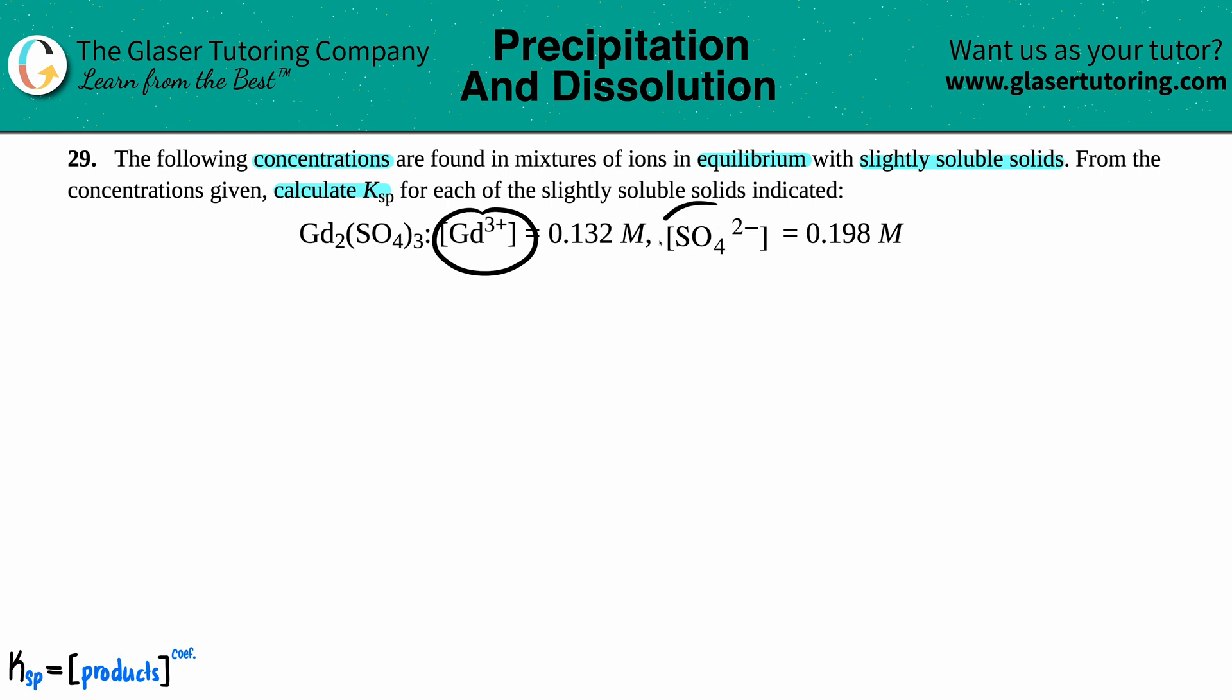They gave it to us already, so no guesswork. I'm just going to use what they gave me. So we got Gd2(SO4)3 and this comes to equilibrium because we're dealing with the K value with the two ions: Gd³⁺ plus SO4²⁻. I have charges, so that's aqueous.